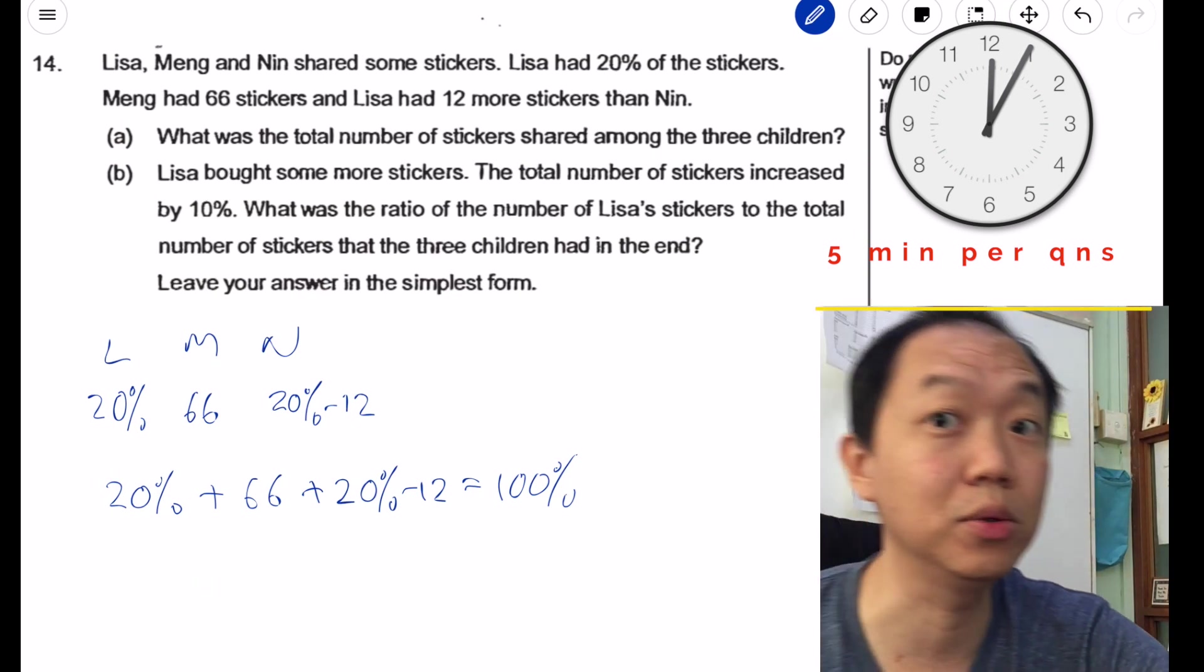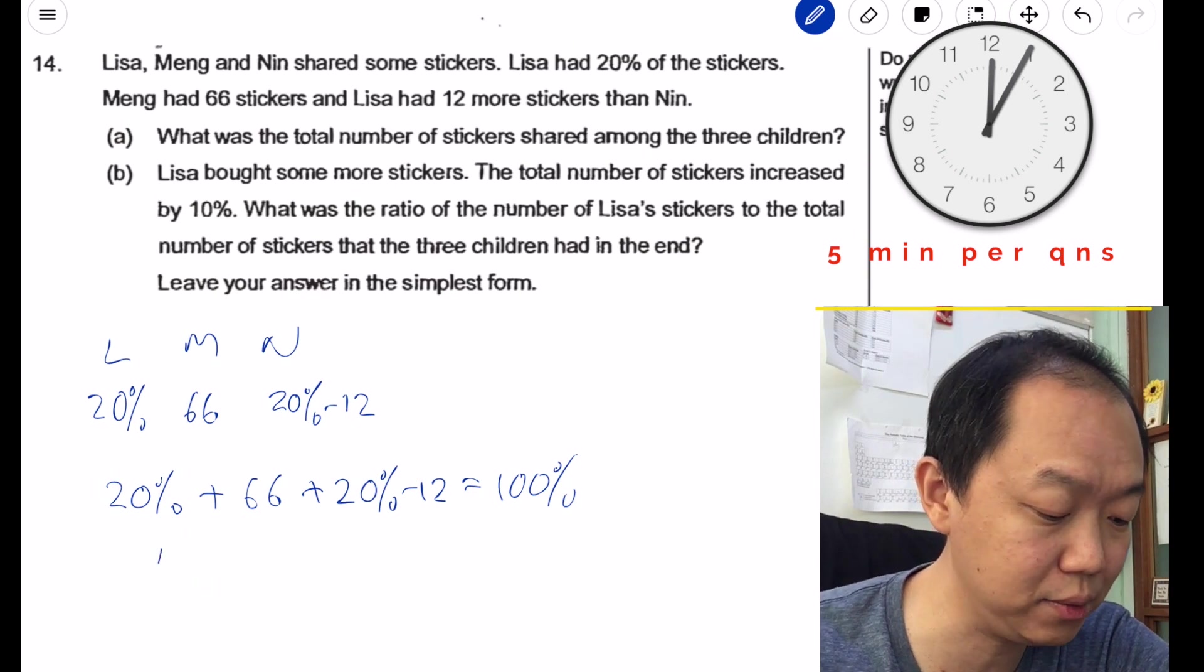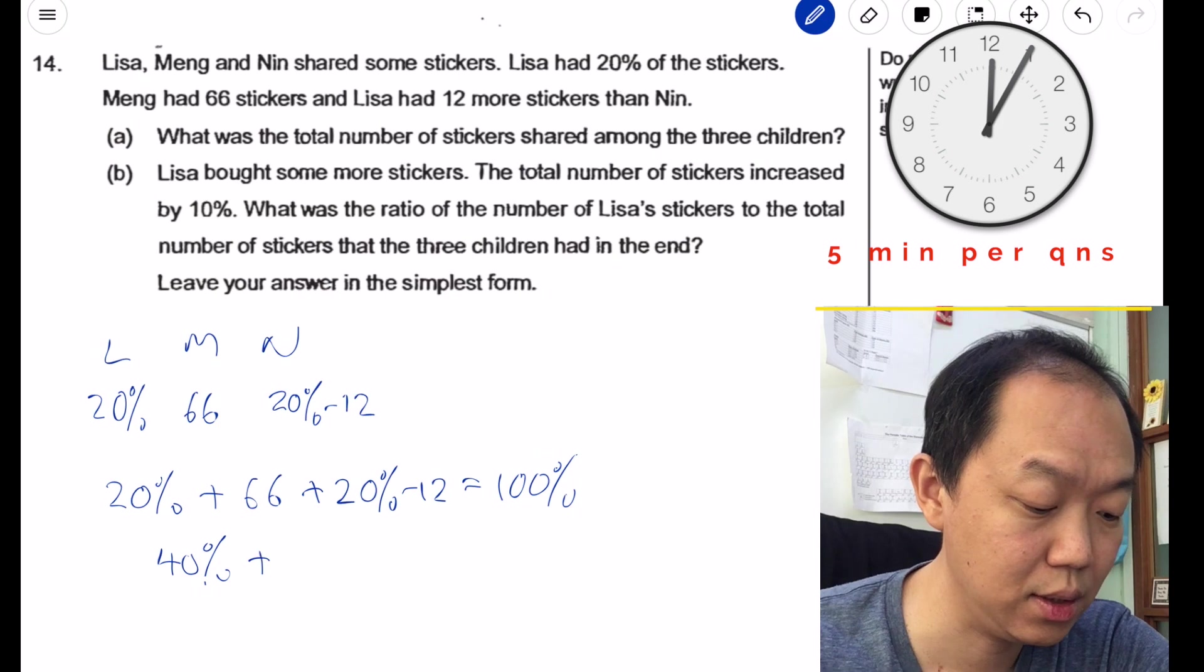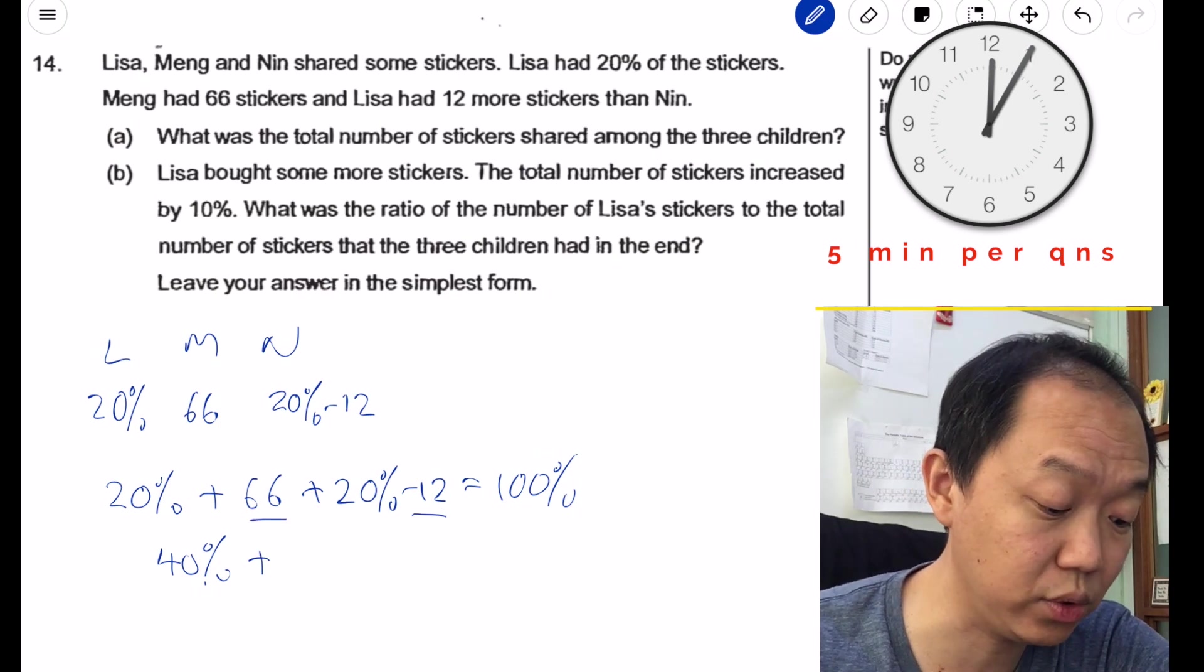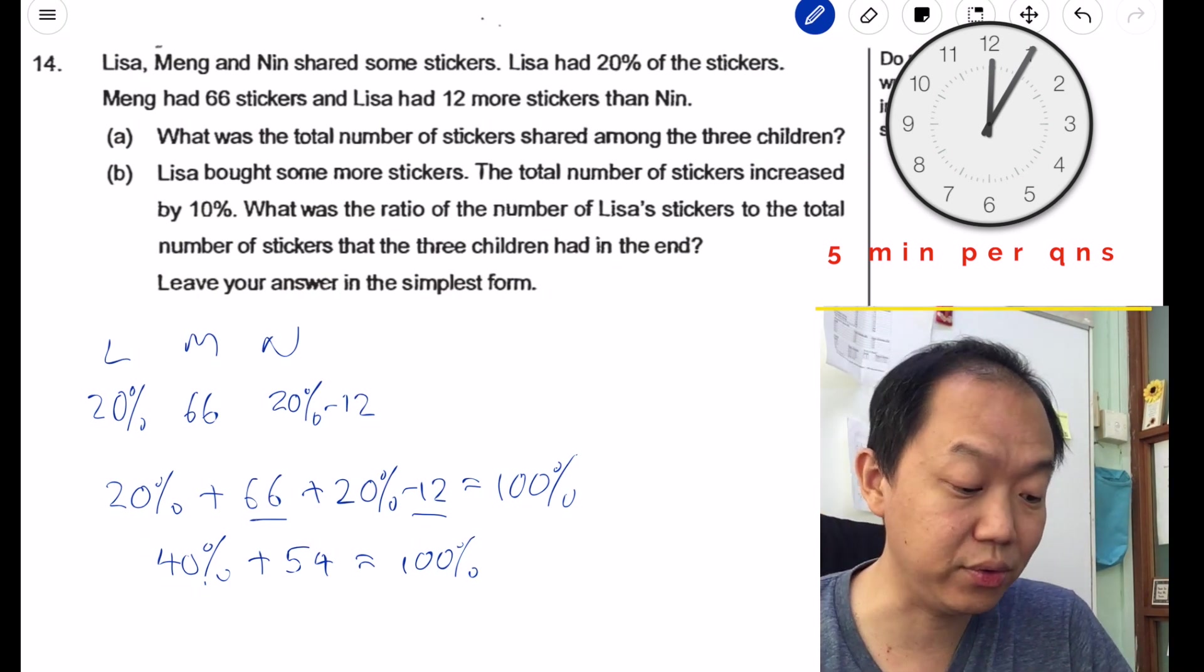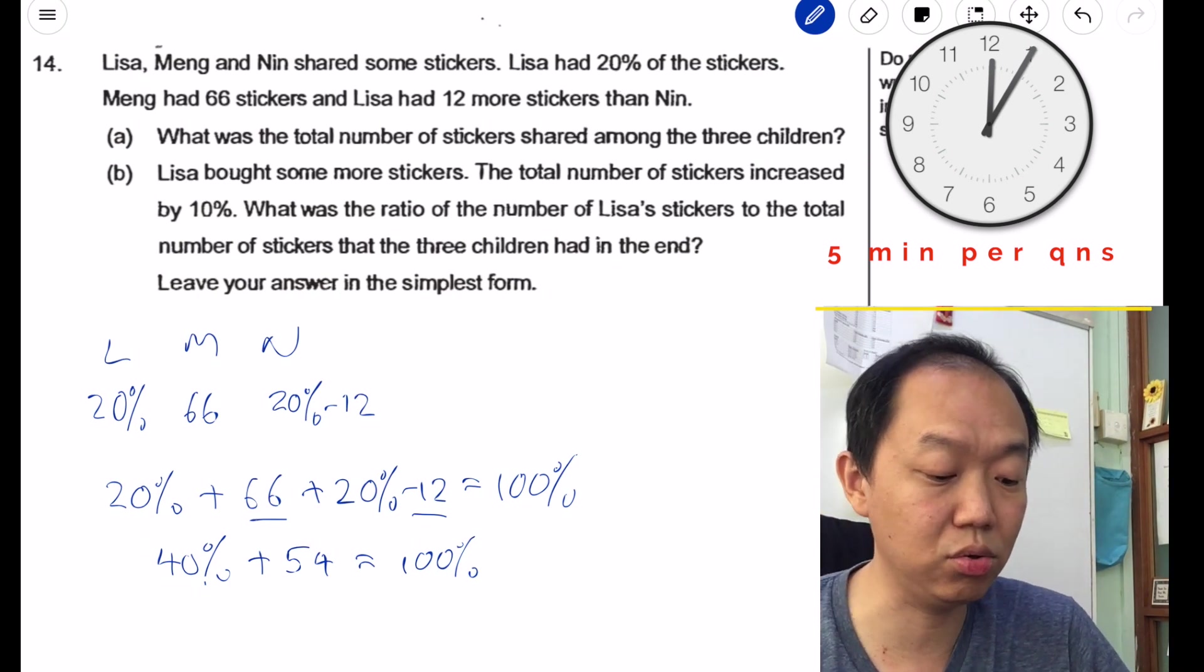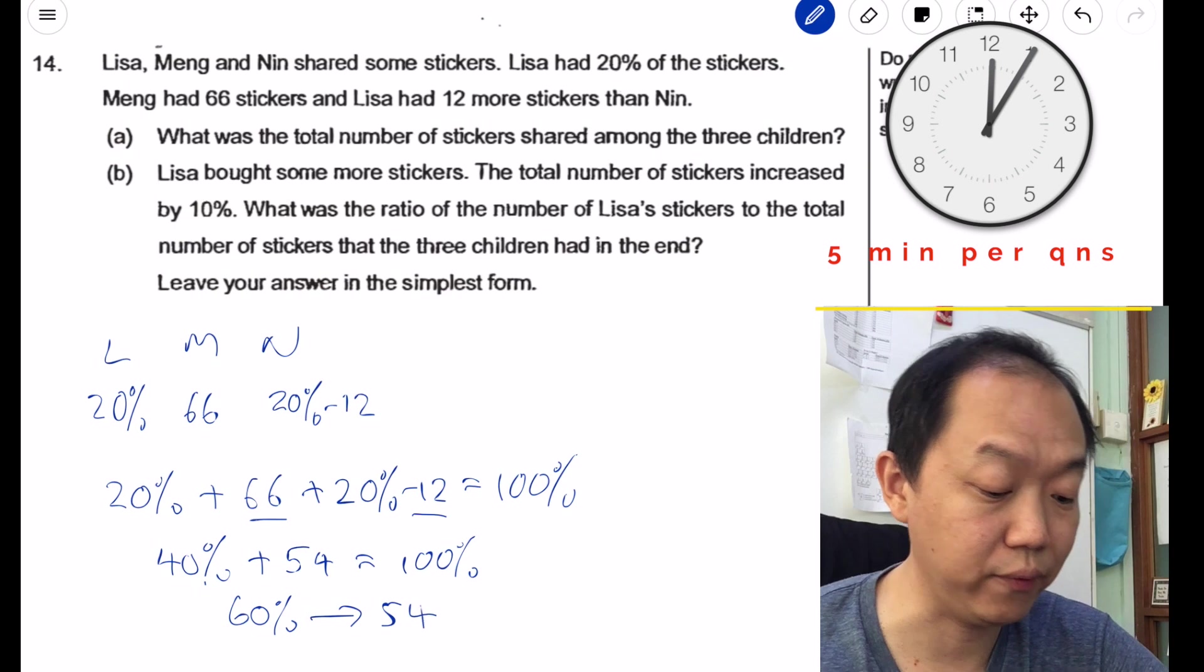If you add them all together, you should get 100%. What this means is if I take 30% plus 66 plus 20%, but I gotta take away 12, it should be equal to 100% and that's the total number of stickers. So we add them all together, so 40% plus 66 take away 12, that will give you 54. It's equivalent to 100%.